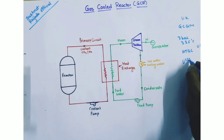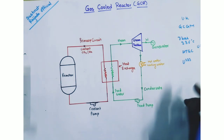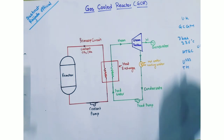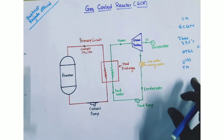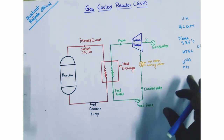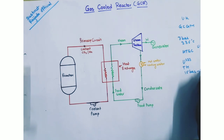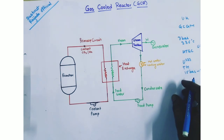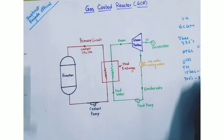The pressure and temperature of the coolant in HTGC is 15 bar to 30 bar pressure, and temperature is approximately 700 degree Celsius to 800 degree Celsius.